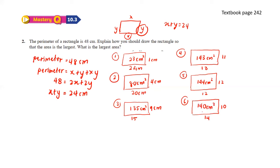Now that we have tried all the shapes, we can notice that the largest area is shape number 5. The largest area is 144 cm squared.